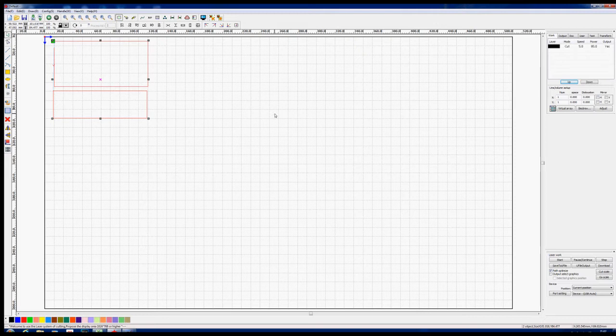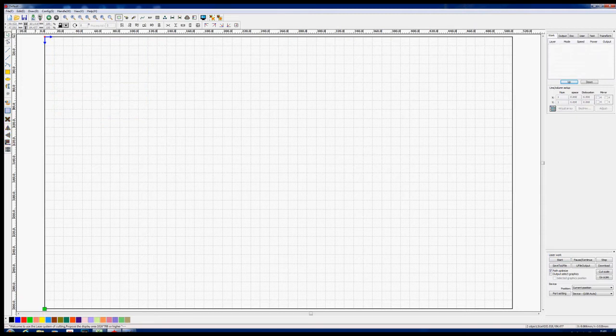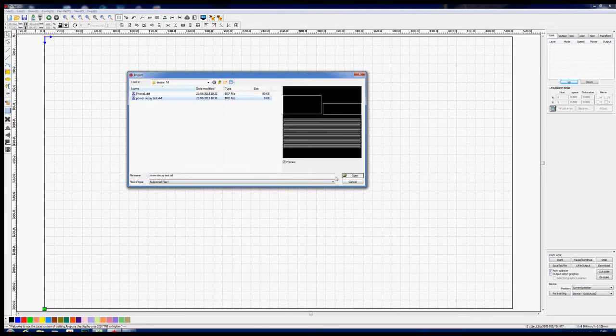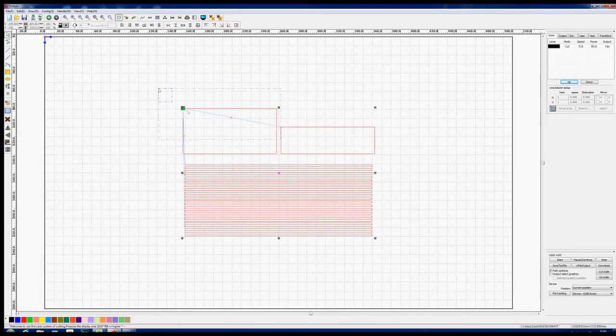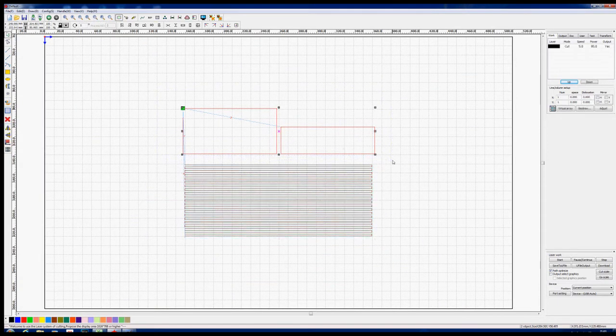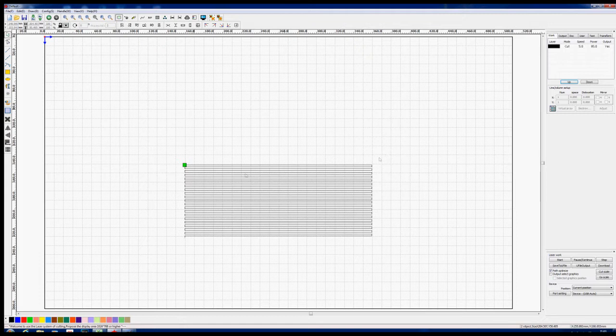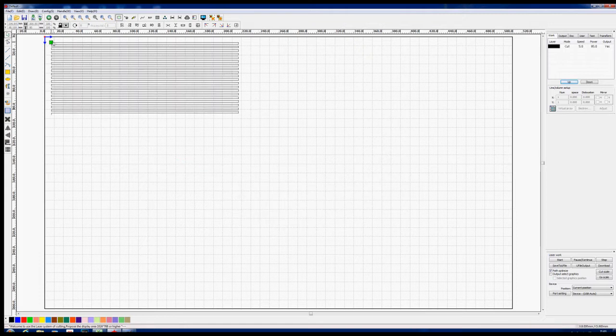We'll now just save that and output it as an RD file. And we'll import our DXF file again. We'll make it full size and this time we'll delete these two items and leave ourselves with this. We'll move that to the top corner.